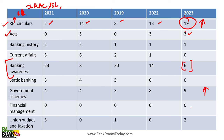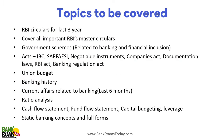Union budget is also very important — last year two questions were asked from it, covering government schemes, union budget announcements, and important taxation changes. So that is the syllabus for the financial awareness section. Topics to cover: RBI circulars for the last three years, all important master circulars, government schemes related to banking and financial inclusion, all acts — IBC, SARFAESI, Negotiable Instruments Act, Companies Act, documentation and value laws, RBI Act, and Banking Regulation Act.